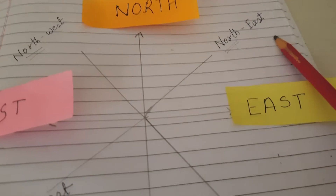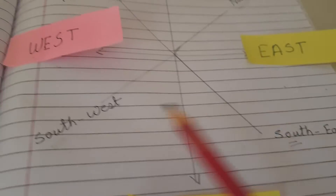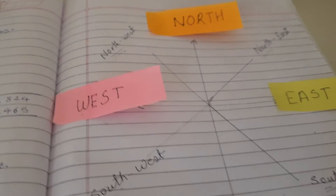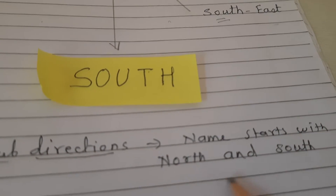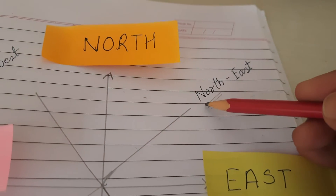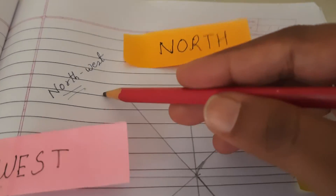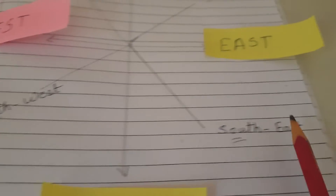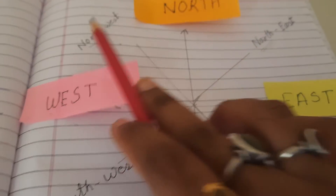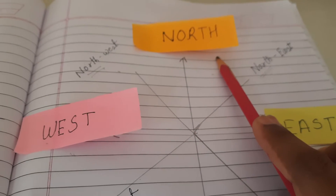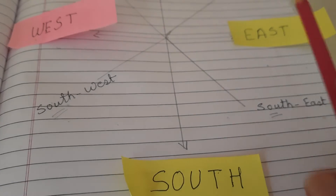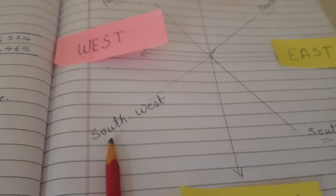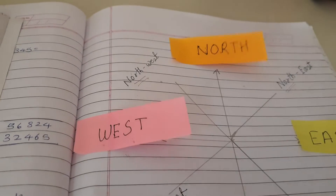If you observe: North-East, South-East, South-West, and North-West - the sub-direction names start with either North or South. So the direction between North and East is North-East, between South and East is South-East, between West and South is South-West, and between North and West is North-West.